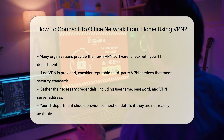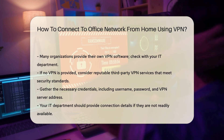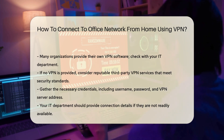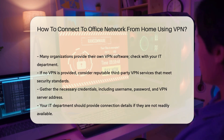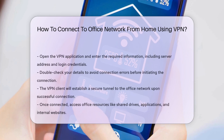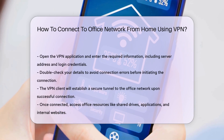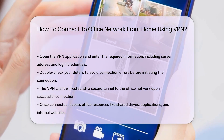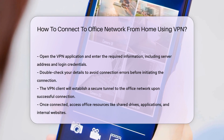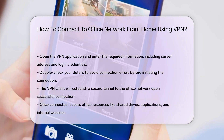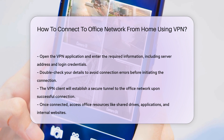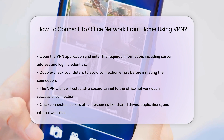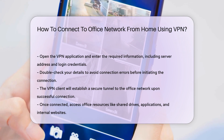Once you have the VPN client and credentials, open the VPN application. Enter the required information, including the server address and your login credentials. Ensure you double-check the details to avoid connection errors. After entering the correct information, initiate the connection. The VPN client will establish a secure tunnel to the office network. You may see notifications indicating that the connection is successful.